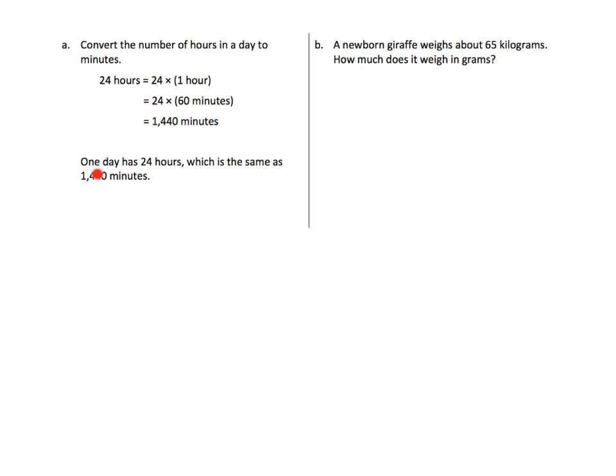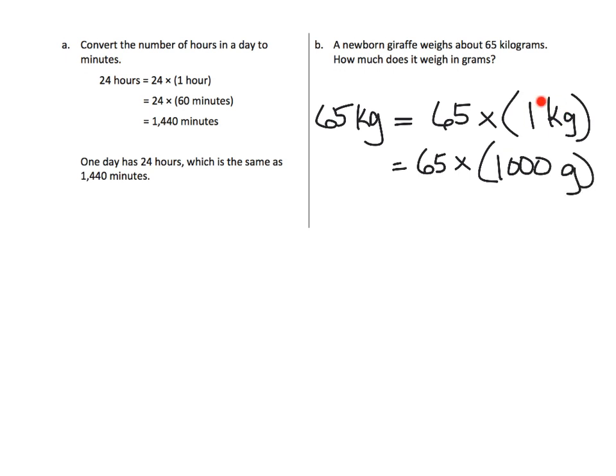So, this is more of the same. The only difference is they want us to summarize with a concluding sentence. So, we've got a newborn giraffe weighs about 65 kilograms. How much does it weigh in grams? So, we've got 65 kilograms. And 65 kilograms is 65 copies of 1 kilogram. And now, because it says we want to convert it into grams, this is really 65 copies of 1,000 grams. Because 1 kilogram is equal to 1,000 grams. Now, multiplying 65 times 1,000, super easy. Because we've learned at this point that we can just stick on those three zeros. And you get 65,000 grams. And that is our answer.